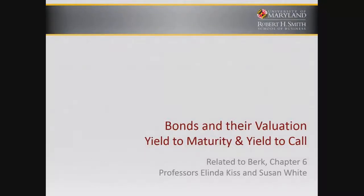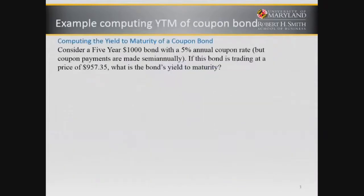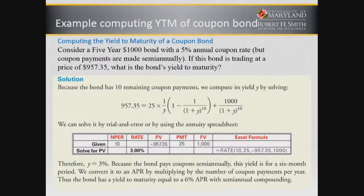Let's look at the yield of a coupon bond, and how yield to maturity and yield to call relate. Let's have a bond with a thousand dollar face and a five percent coupon rate — that's the annual rate, but coupon payments are made semi-annually. If this bond is trading at a price of $957.35, what's the bond's yield to maturity?